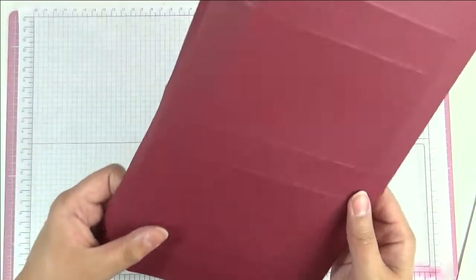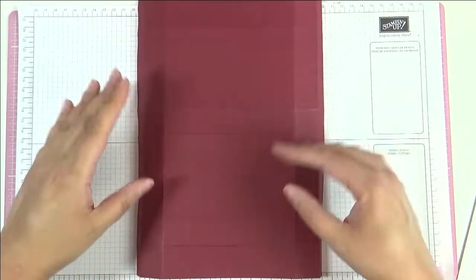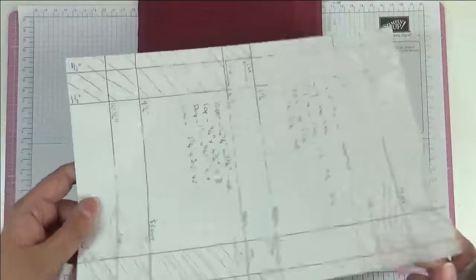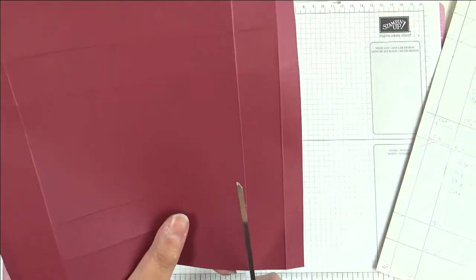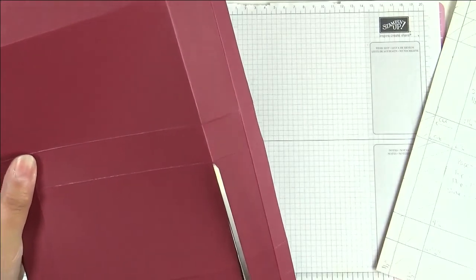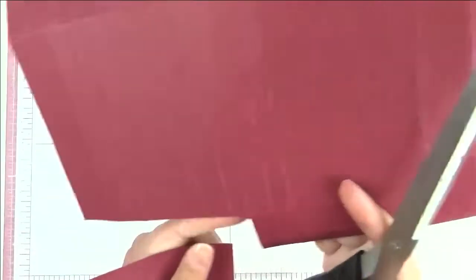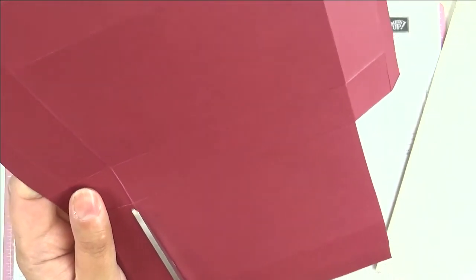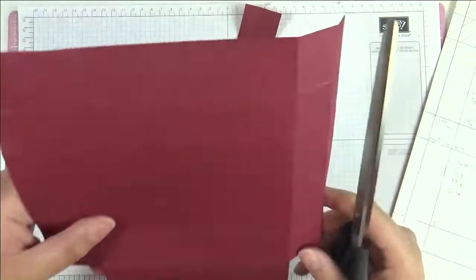Now we fold all of our score lines so at the moment the top and the bottom are total mirror images of each other. So you can see here where I've marked all the shaded areas, that's where we're going to cut. So I'm going to cut here, one, two score lines in, and I'm going to cut up to the third score line. I'm going to cut that piece out just like that, and I'm going to do the same on the other side. So second score line in and up to the third score line and cut that piece out just like that.